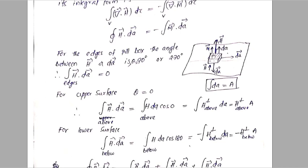Consider a pill box here. The pill box has a very small thickness. Half of it is in the upper part of the magnetized sheet and half below. The direction of the dA vector on the upper surface is perpendicular and outward, and on the lower surface it is in the opposite perpendicular direction.